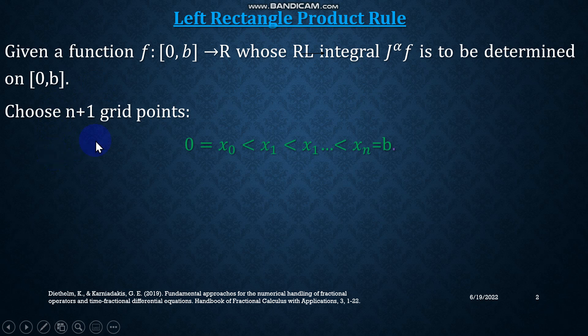For that purpose, we can choose n+1 grid points as you can see on the screen, starting from x₀ to xₙ, where x₀ is 0 and xₙ is b as we are given in the closed interval.